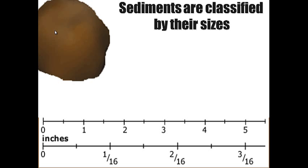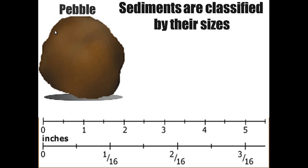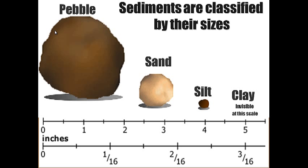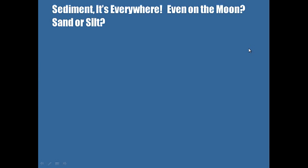Sediments are classified by their size. We have bigger things like pebbles, then smaller things like sand, then even smaller is silt, and even finer are clay particles — they're almost like dust particles and so fine they're invisible at this scale. Clay particles stick together making clay, and clay is nice because it doesn't let water pass through it — that's how fine-grained those particles are.